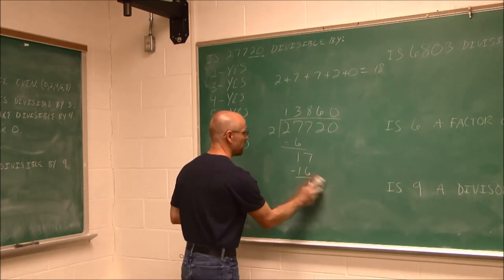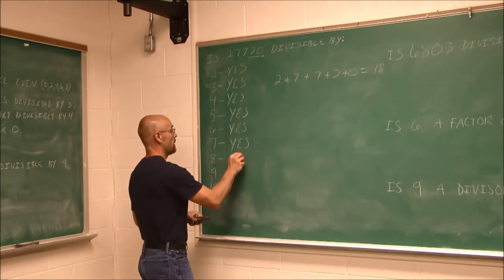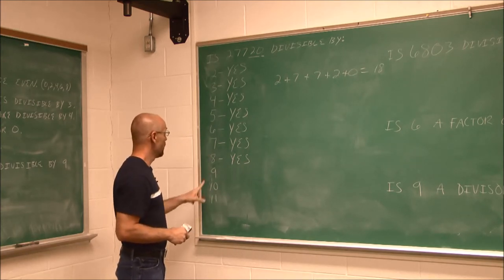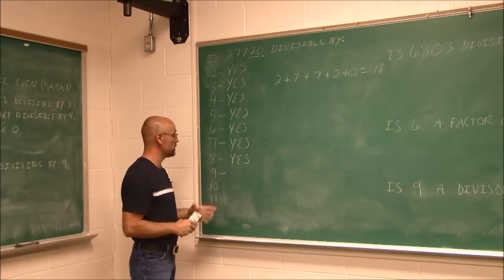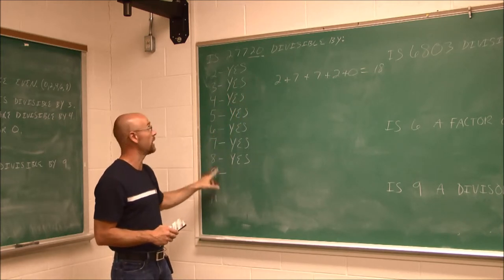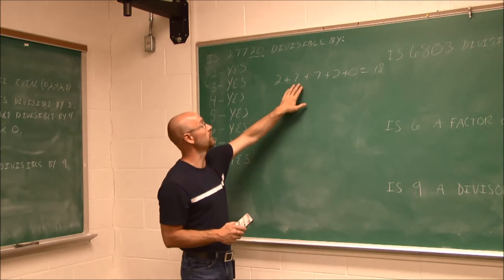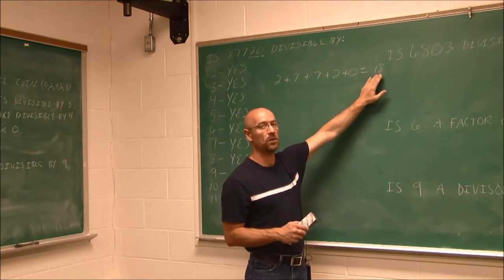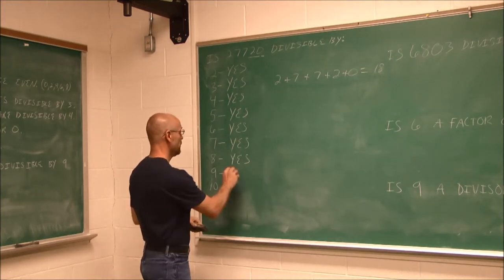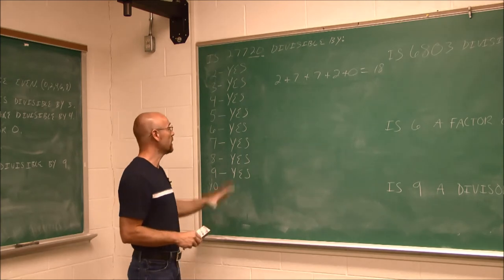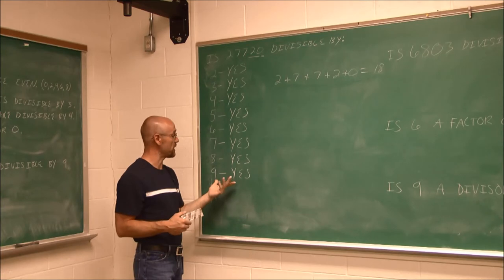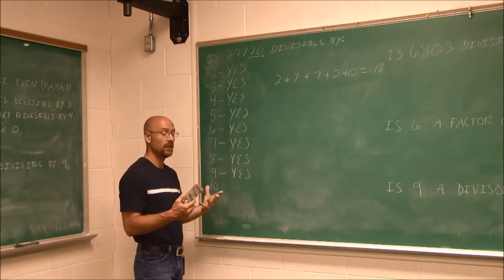Now for 9: the sum of the digits must be divisible by 9. We already summed the digits and got 18. Is 18 divisible by 9? It sure is — it's 9 times 2. So the whole number is divisible by 9. These rules give us the concept that we can determine even divisibility without doing full division.